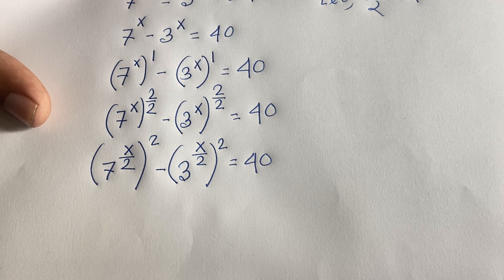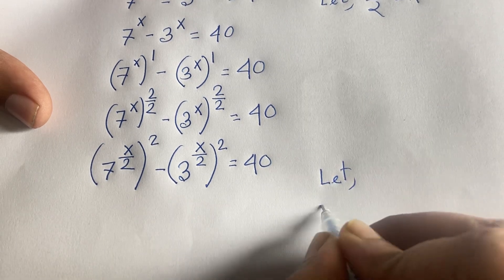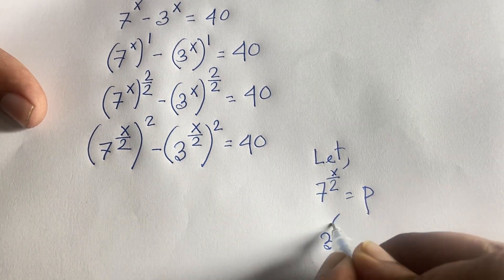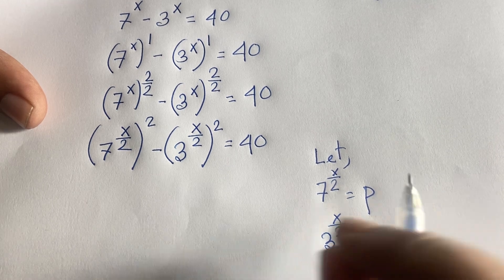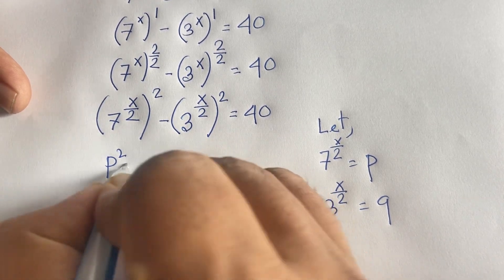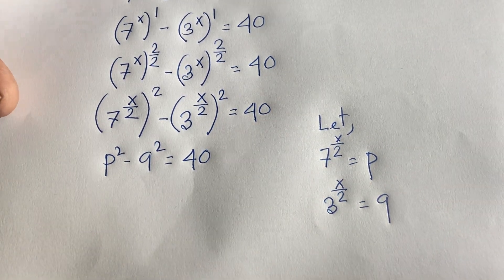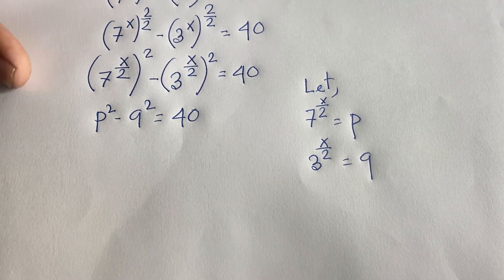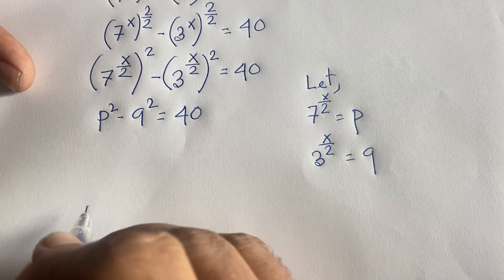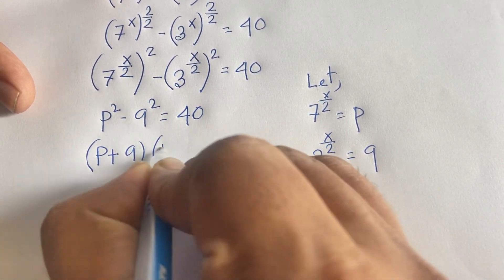Now let p equal 7^(x/2) and q equal 3^(x/2). The equation becomes p squared minus q squared equals 40. Applying the difference of squares formula — a² minus b² equals (a+b)(a-b) — this gives us (p + q)(p - q) = 40.